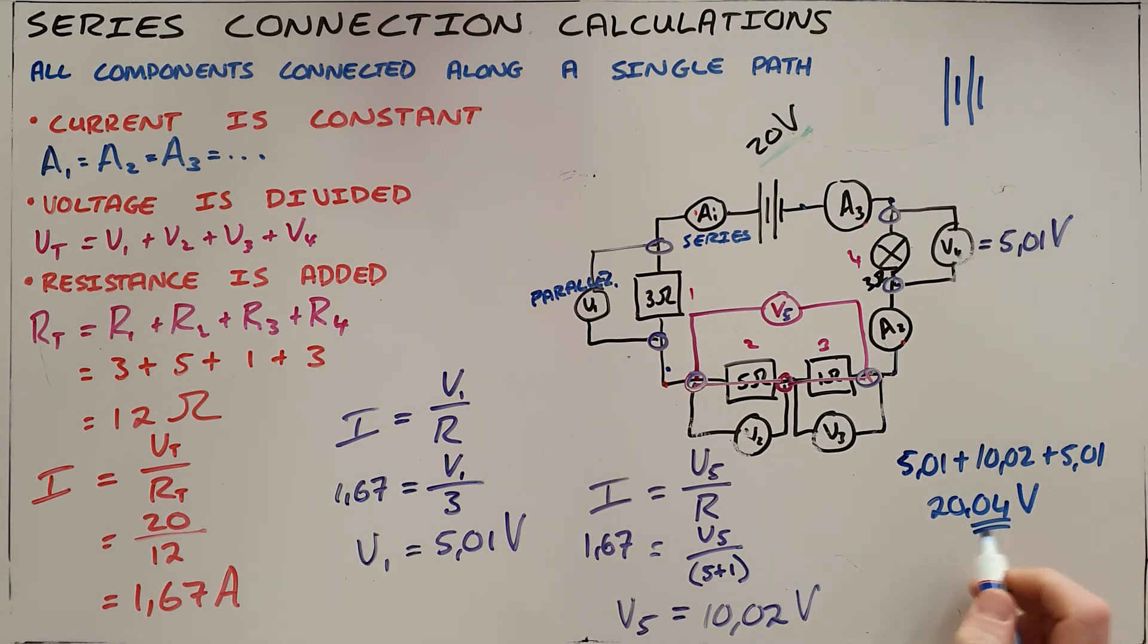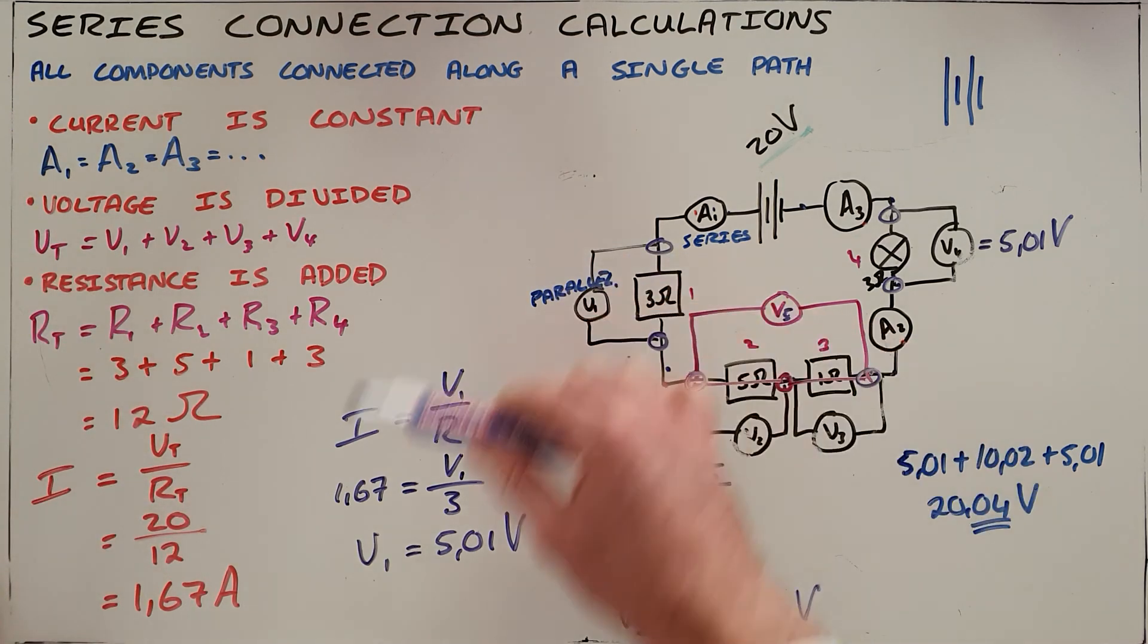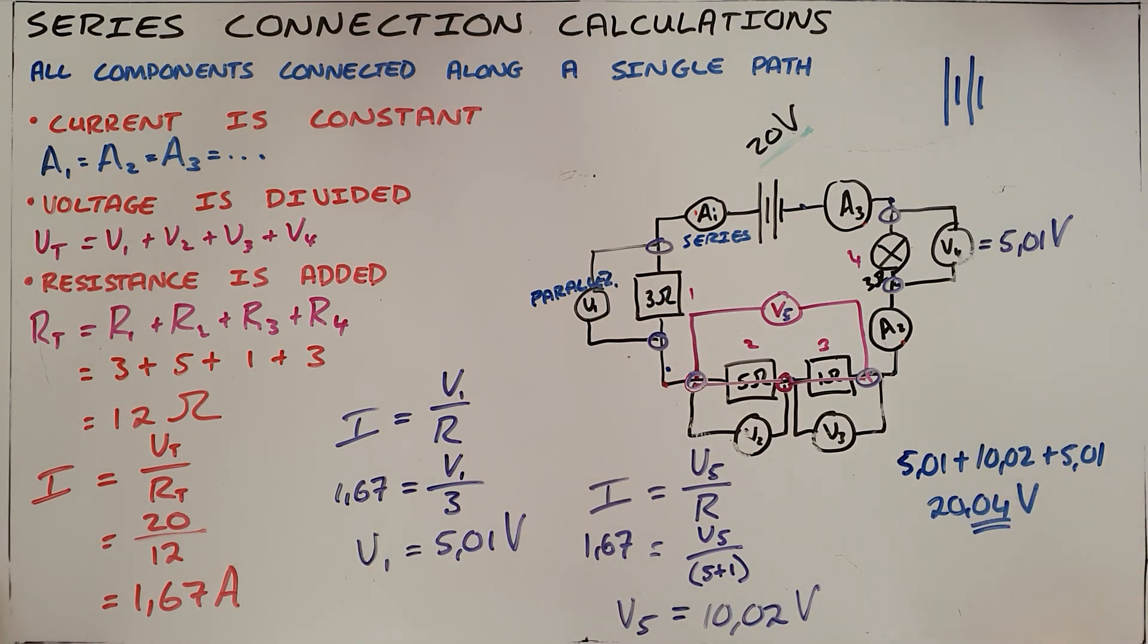Obviously, this 0.04 here is just because we have rounded our current off and is negligible and would not penalize you at all. So what we are trying to get at here is we're trying to show that using your three laws for series connections and Ohm's law, you can always solve for unknown values in your circuit.